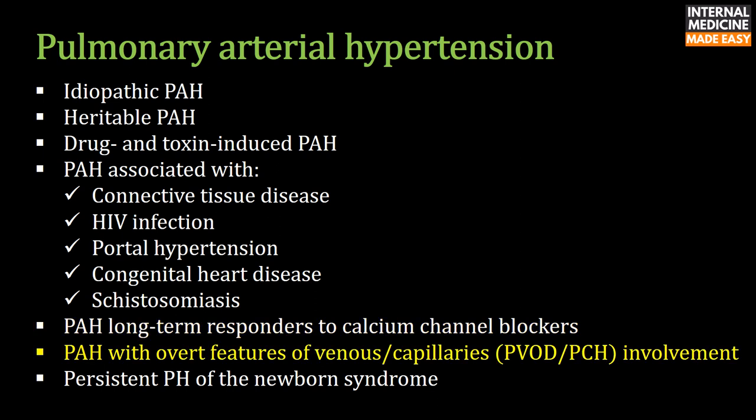Pulmonary veno-occlusive disease is characterized by progressive obliteration of pulmonary venules, elevation of arterial pressures, and increased vascular resistance, leading to right ventricular failure and death. Pulmonary capillary hemangiomatosis is characterized by capillary proliferation and pseudo-invasion of collagenous septal structures.